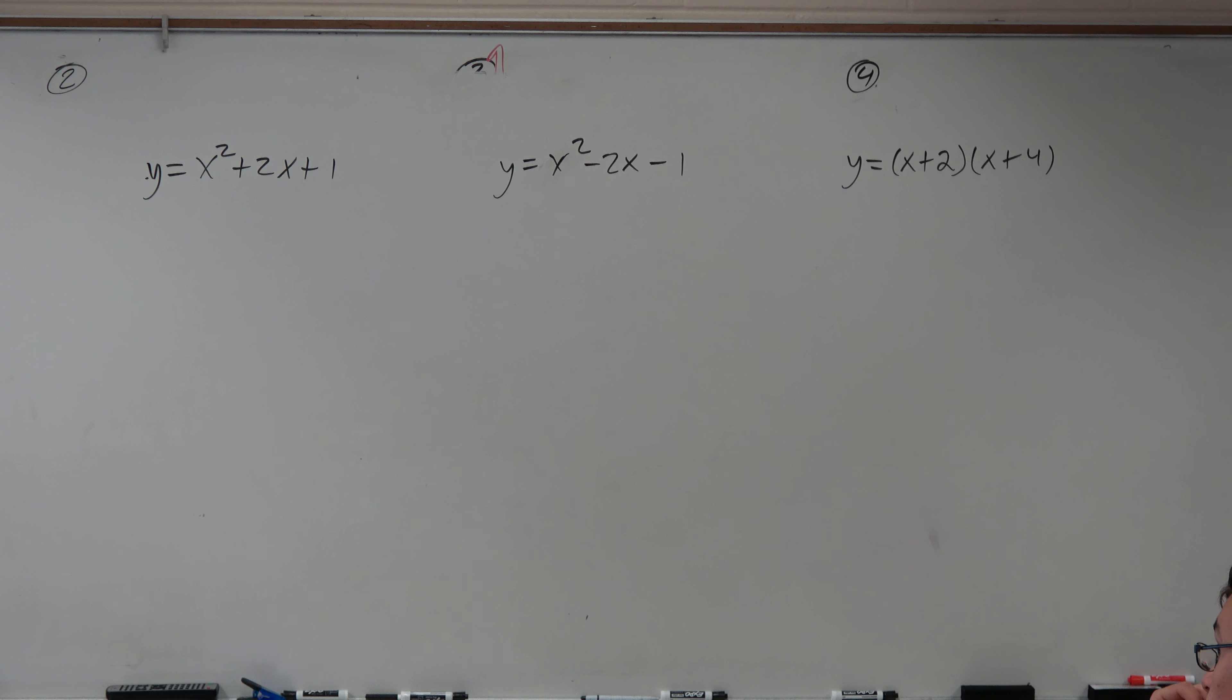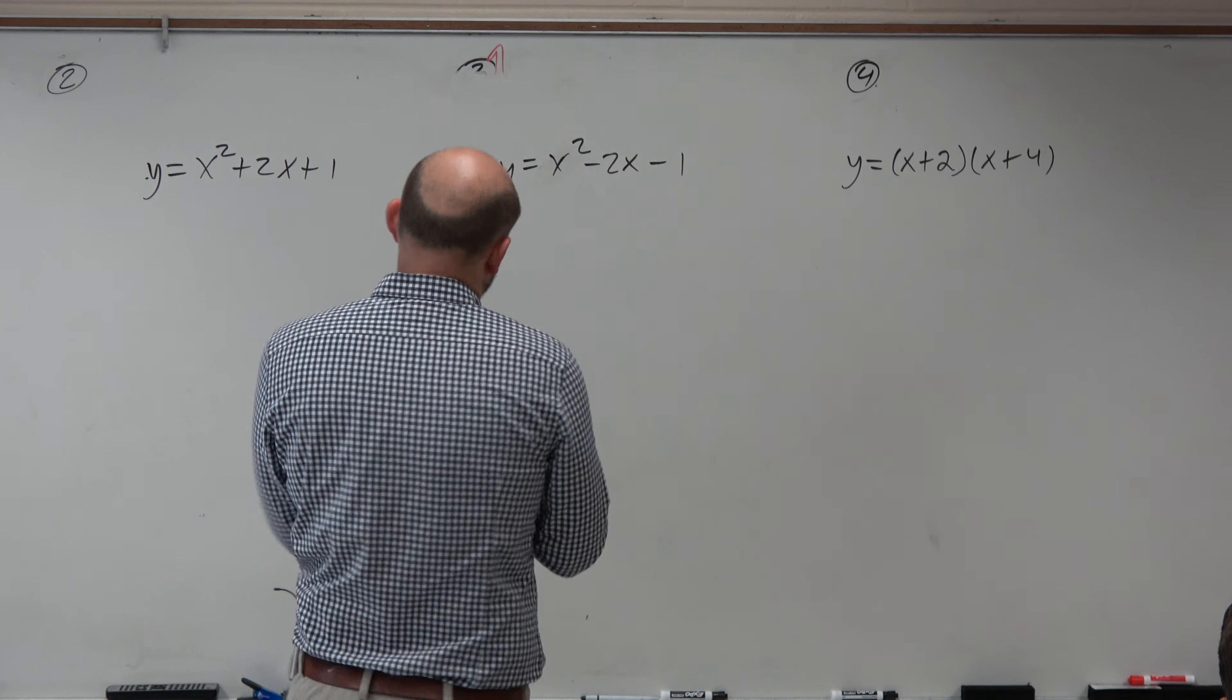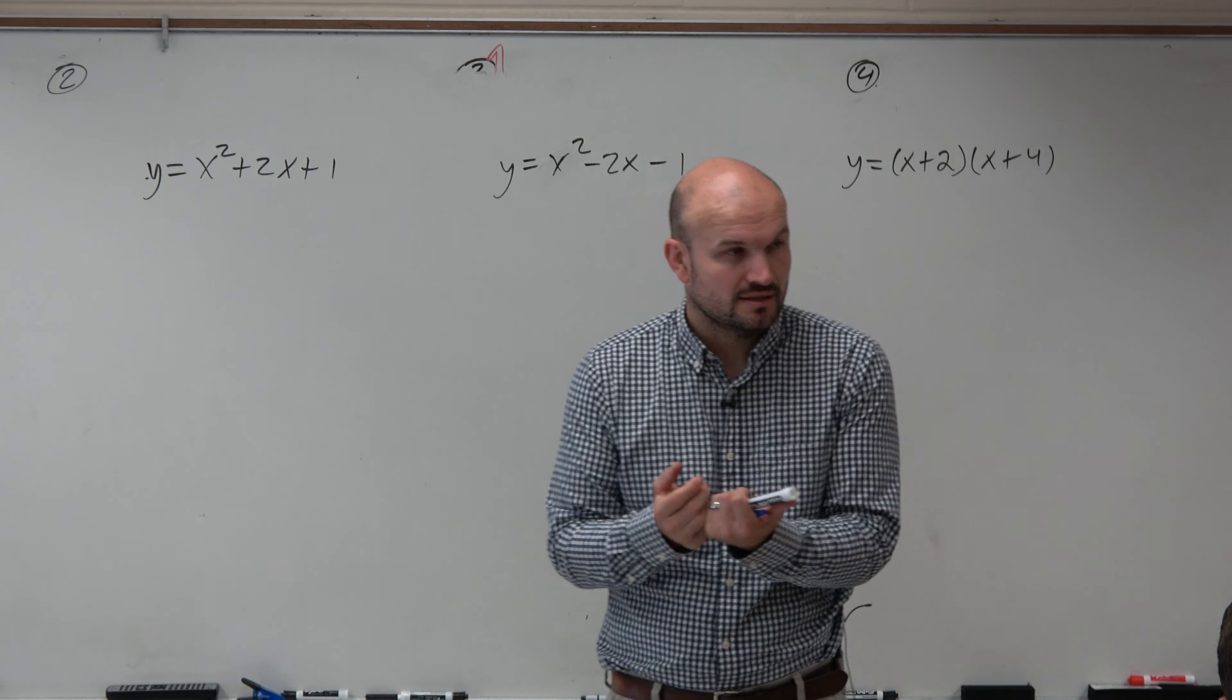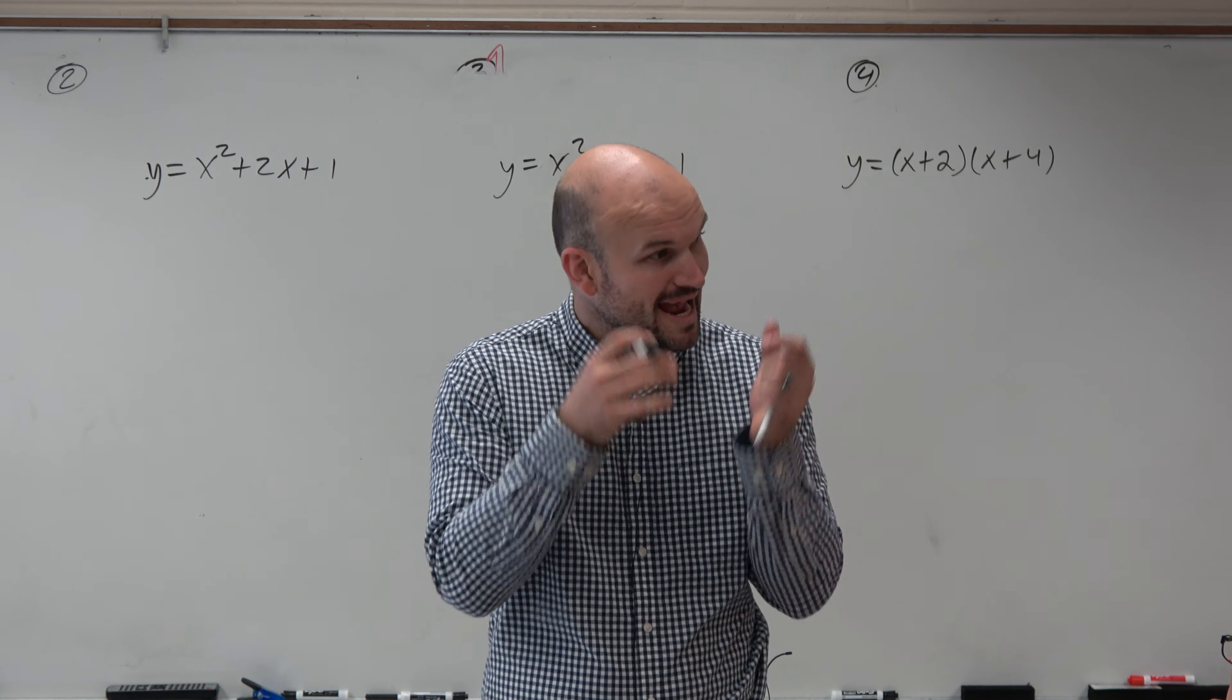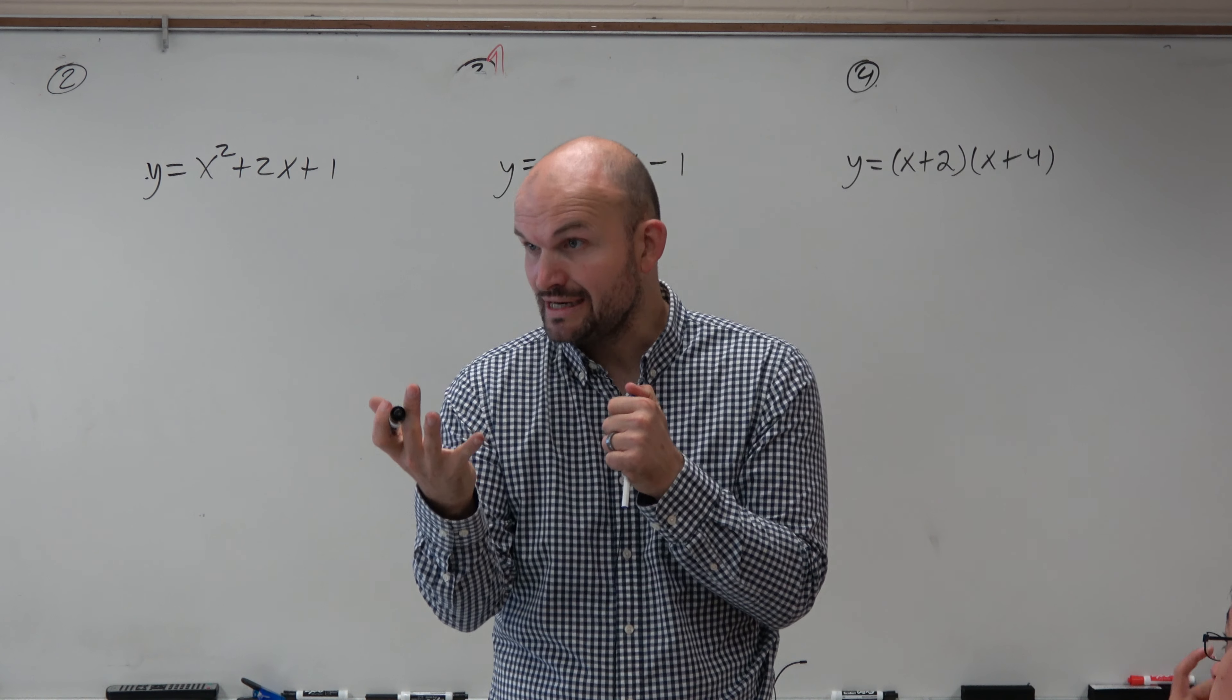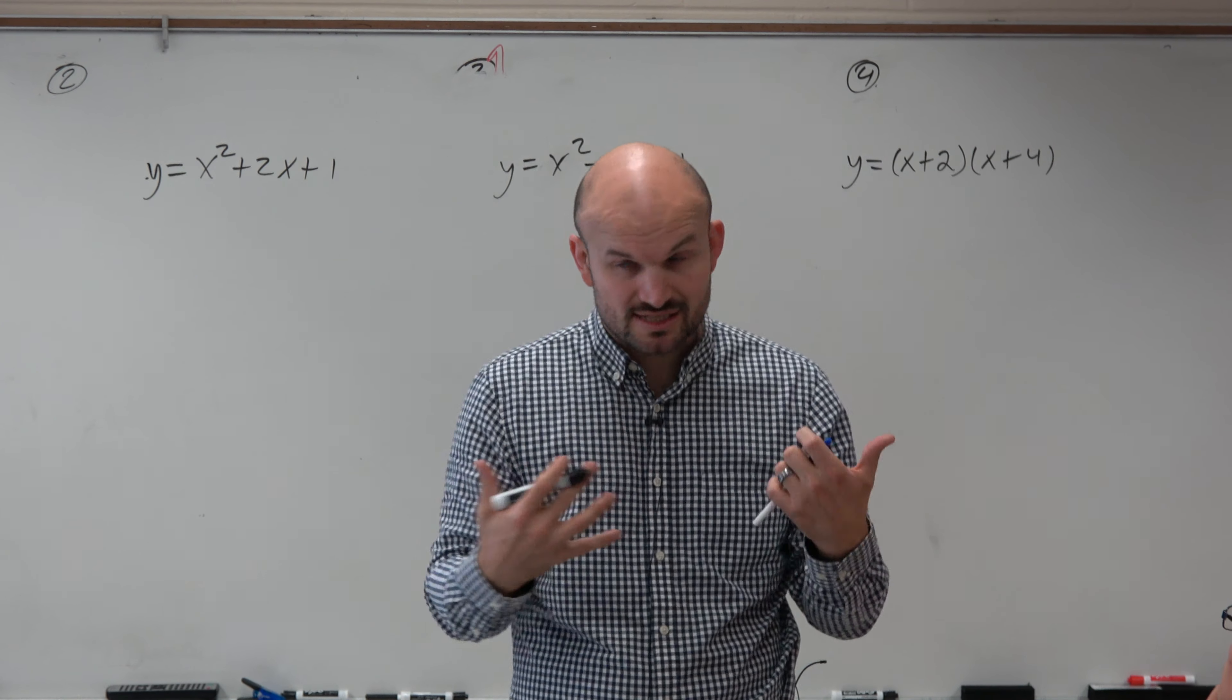So in these three examples, let's go through completing the square. The process of completing the square - what we're trying to achieve is to put something in vertex form. Vertex form has that binomial squared. Once we know the binomial squared, transformations and all that kind of stuff are relatively easy.